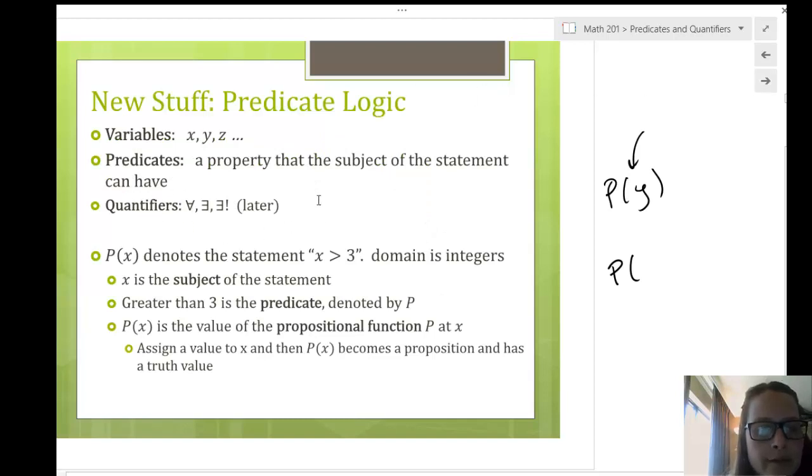So, these are our quantifiers we're going to be dealing with. This is for all, so this is for one or more, okay? There exists, that's how you would read it. And then this exclamation point, there exists exactly one, so it's unique. And we'll talk about those more in the next video, just to kind of give you a heads up there with notation, okay?